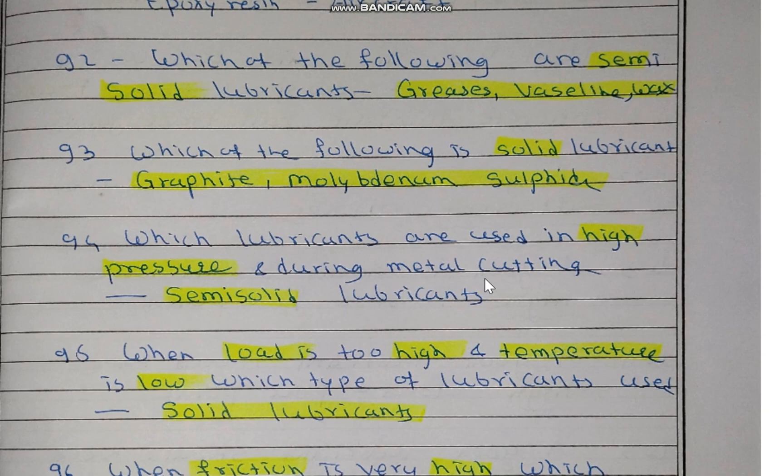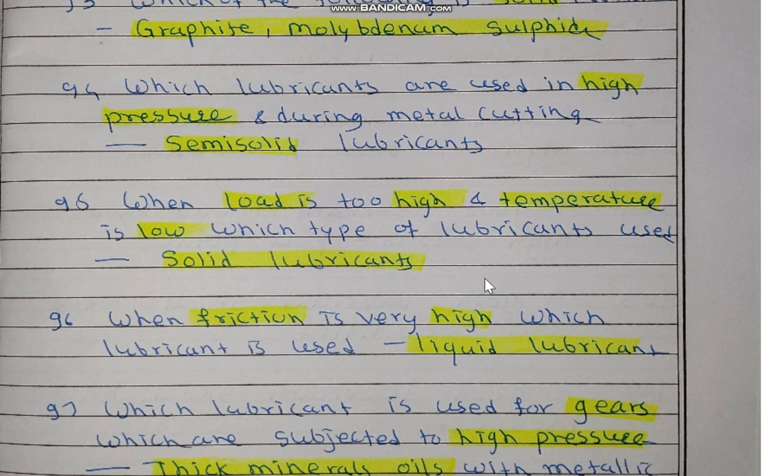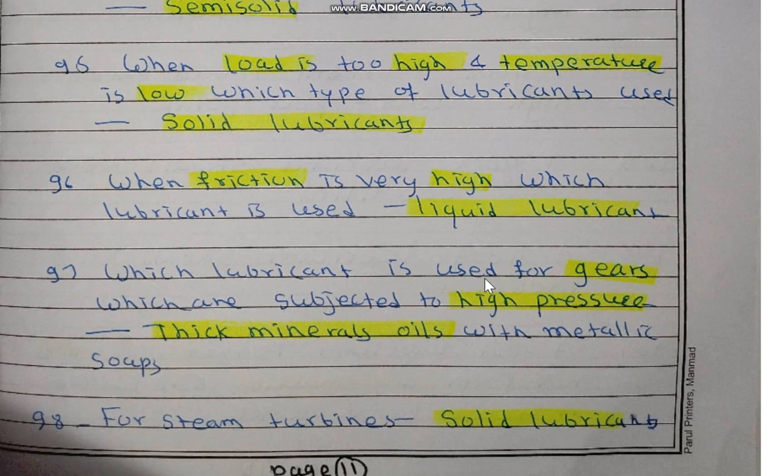Semi-solid lubricants are greases, Vaseline, and wax. Solid lubricants include graphite and molybdenum sulfide. Semi-solid lubricants — meaning grease and wax — are used at high pressure during metal cutting.